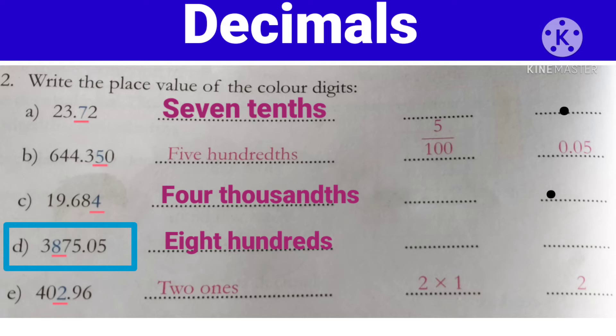Toh hume yaad rakhiye: whole part ko hum kis tarah se count karenge — ones, tens, hundreds se count karenge. Aur fractional part ko hum 10th se start karenge: 10th, 100th, 1000th. Aur hum whole part ko right side se count karenge. Aur fractional part ko hum left side se count karenge.